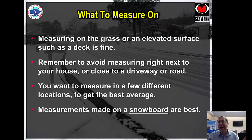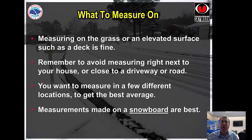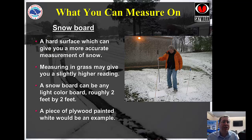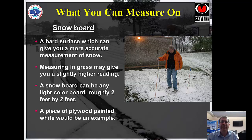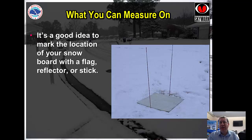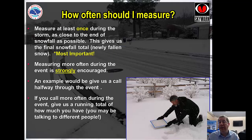What can you measure on? Grass is fine. A deck would be a little bit better because you have a nice hard surface — an absolute zero — but unfortunately most decks are close to your house, and we want you to get away from that. A snowboard would actually be best, and all that is is a hard surface that you can put exactly where the best location is in your yard, giving you a zero reference when you put the ruler down. You can make this using a piece of plywood, roughly two feet by two feet, and paint it white. Mark the location because once you get more than an inch or two of snow, a white board in a yard is hard to see.